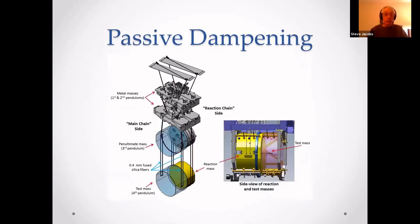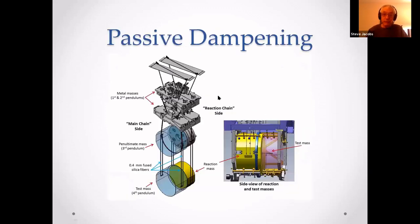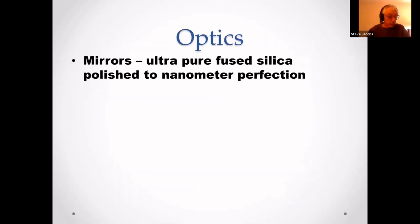Here is a diagram of passive dampening showing the four pendulums. The mirror — called the test mass — is what they use to test optics. The mirror is ultra-pure fused silica polished to nanometer perfection with many coatings, making it very reflective.